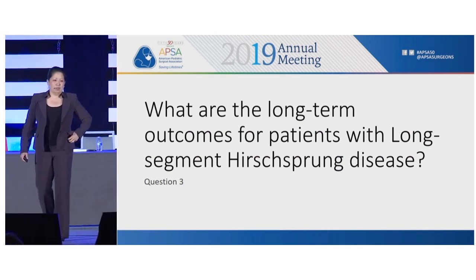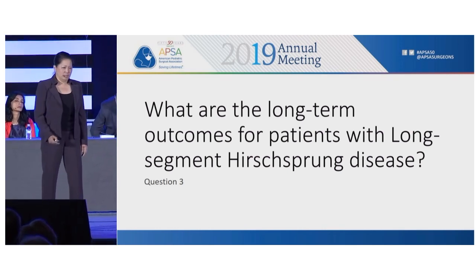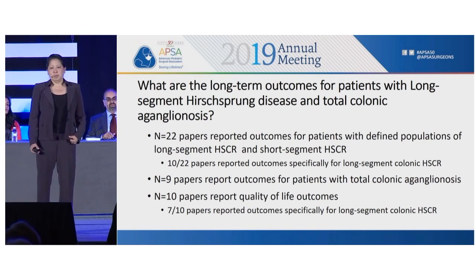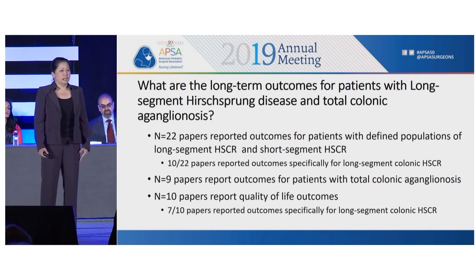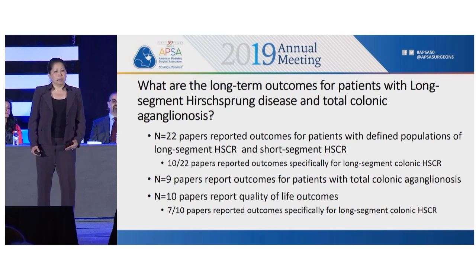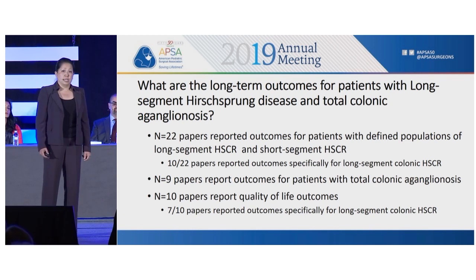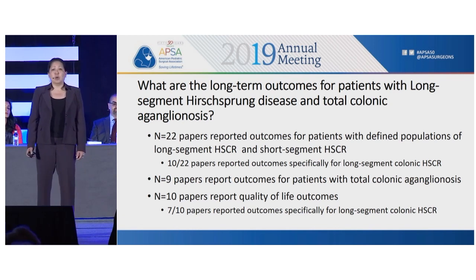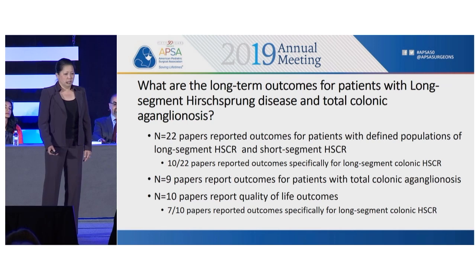What are the long-term outcomes for patients with long-segment Hirschsprung disease? This is a fairly hard question. We identified 22 papers that stratified patients according to long-segment, short-segment, and total colonic aganglionosis, but only 10 out of 22 specifically identified outcomes for patients with long-segment Hirschsprung's. Nine papers addressed total colonic aganglionosis, and 10 papers reported on quality of life, but only seven specifically spoke about long-segment.